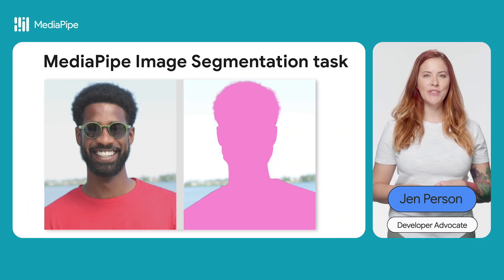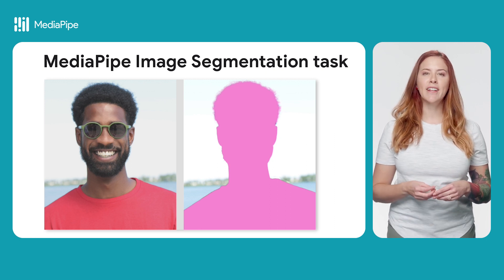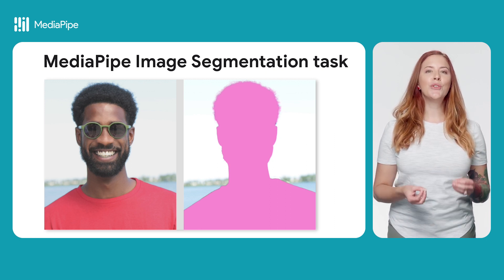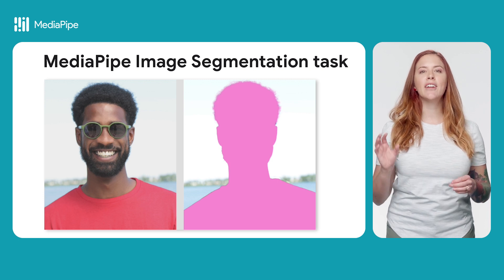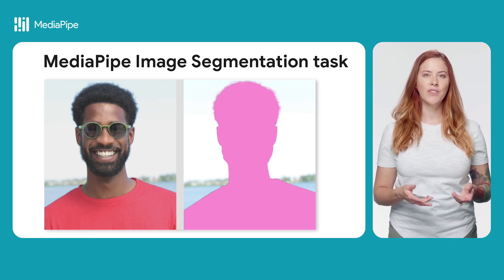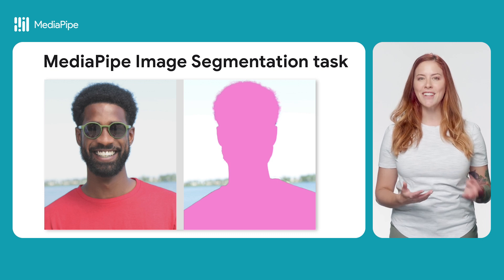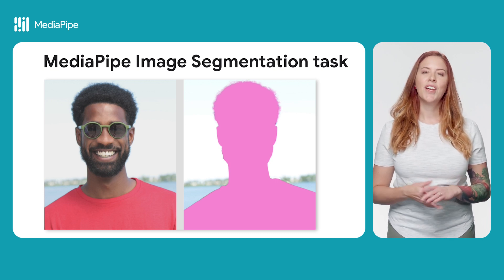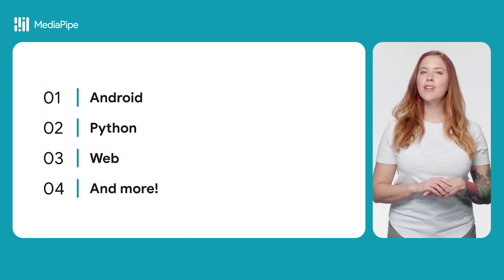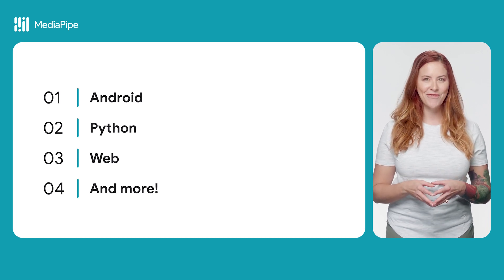The MediaPipe Image Segmenter task lets you divide images into regions based on predefined categories. You can use this functionality to identify specific objects or textures and then apply visual effects like background blurring. There are APIs available for Android, Python, and the web, with more coming in the future.